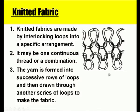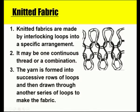Knitted fabric is made by interlocking loops into a specific arrangement — one fabric tied or interlocked with another. Knitted fabrics may be made from one continuous thread or combinations of threads. The yarn is formed into successive rows of loops and then drawn through another series of loops, connecting and interlocking to make the fabric.